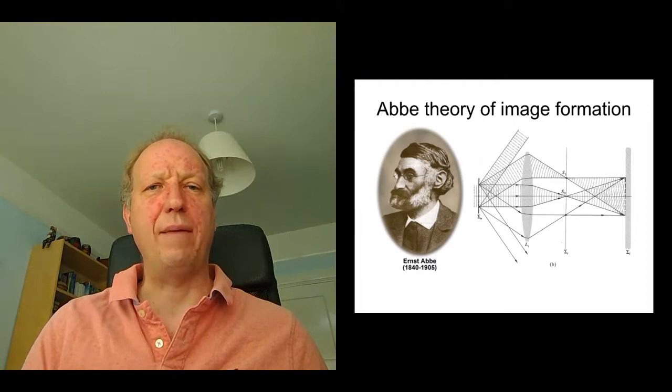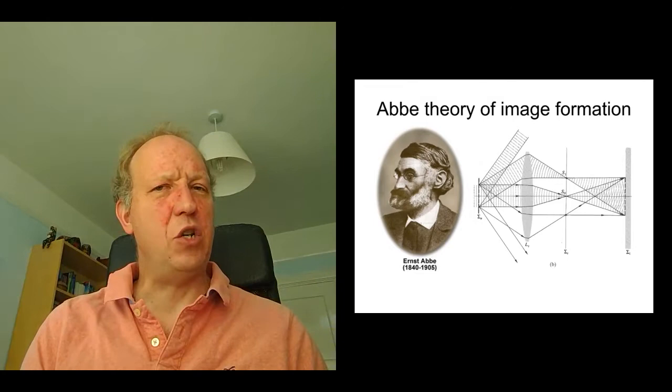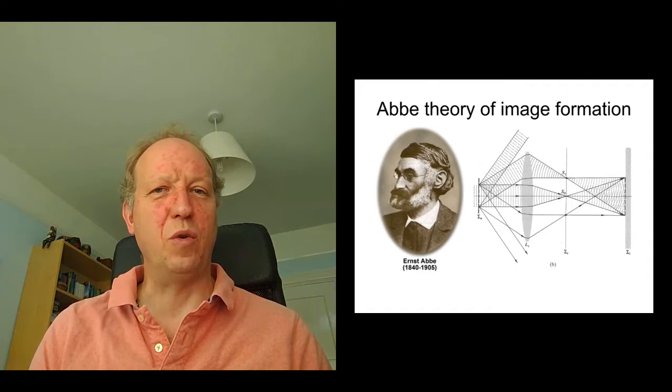And so Abbe said really imaging in the microscope is a two-step process. First of all, we have diffraction, and the lens captures some of this diffraction. And then the diffraction can then interfere with itself to re-form an image. Now there's a fundamental issue here, and this is one of the things I'm going to be asking you about perhaps in the Q&A session after this talk, if there's one available.